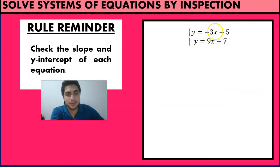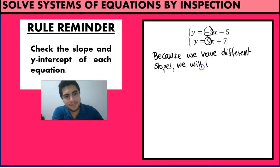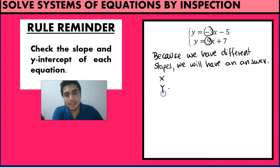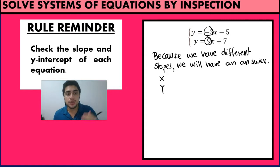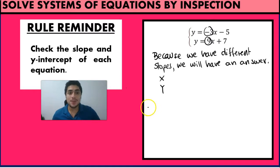In this first case, we have y equals minus 3x minus 5, so the slope is minus 3, and the second equation is y equals 9x plus 7, so the slope is 9. Because we have different slopes, we will have a solution for X and a solution for Y. When solving by inspection, we don't need to find the actual values — we would use substitution, elimination, or Gauss-Jordan for that. Here we just say: this problem has a solution.